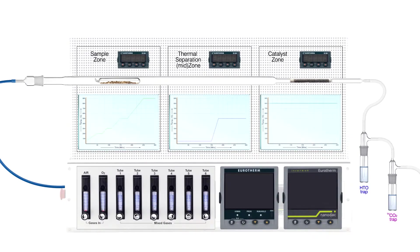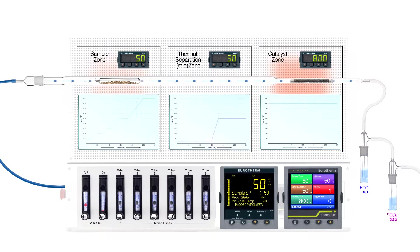The catalyst zone is maintained at 800 degrees Celsius. The analyst selects a desired program and the run begins. Air flow to all tubes is automatically activated and the sample zone is heated according to a predefined heating profile. At this stage, the mid zone is not actively heated.